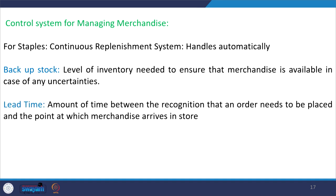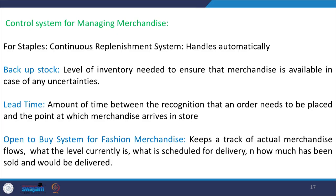You also need to account for lead time — the amount of time between the recognition that an order needs to be placed and the point at which merchandise arrives in stores from vendors. If lead time is very high, you need to plan accordingly. If stocks fall below the minimum threshold and you place orders knowing the lead time is six months, you will lose out on a lot of opportunity cost by leaving customers empty-handed and maintaining low product availability.